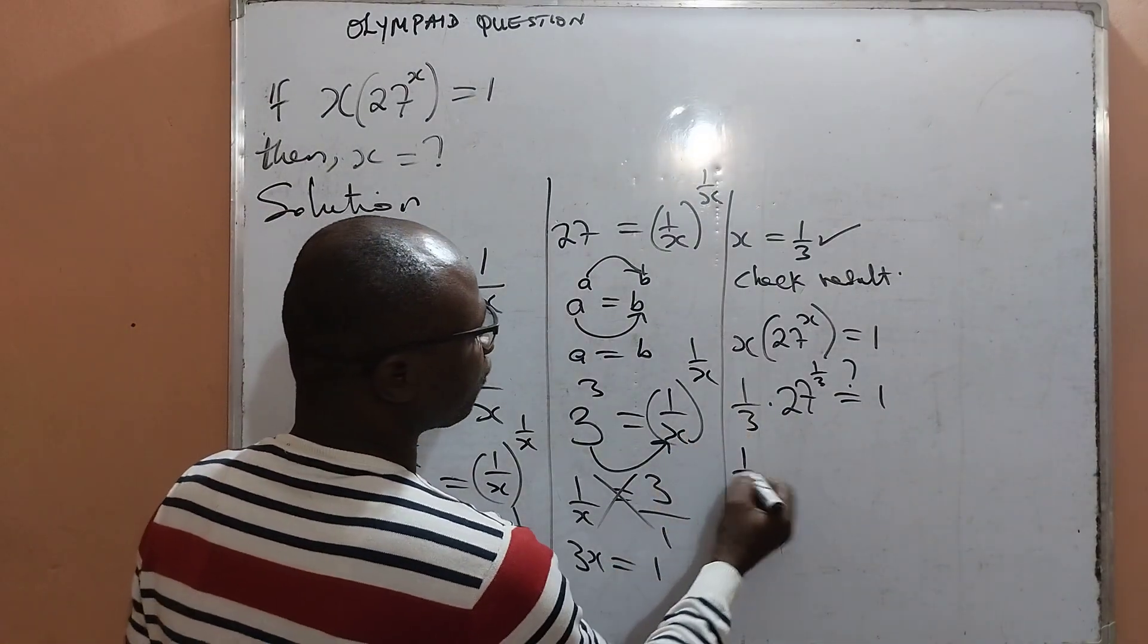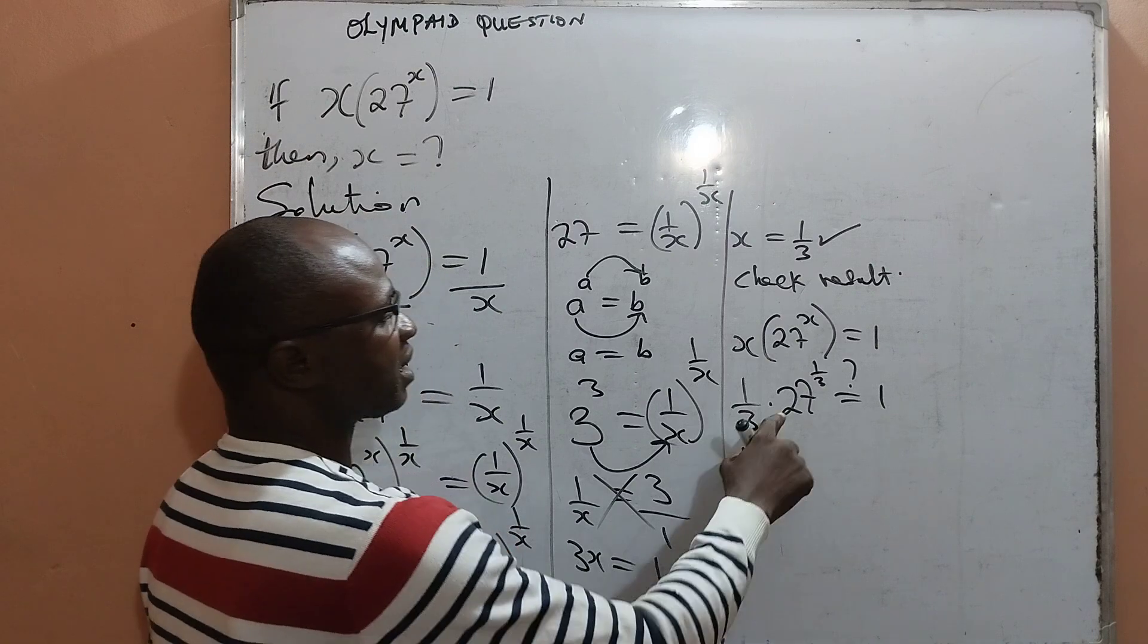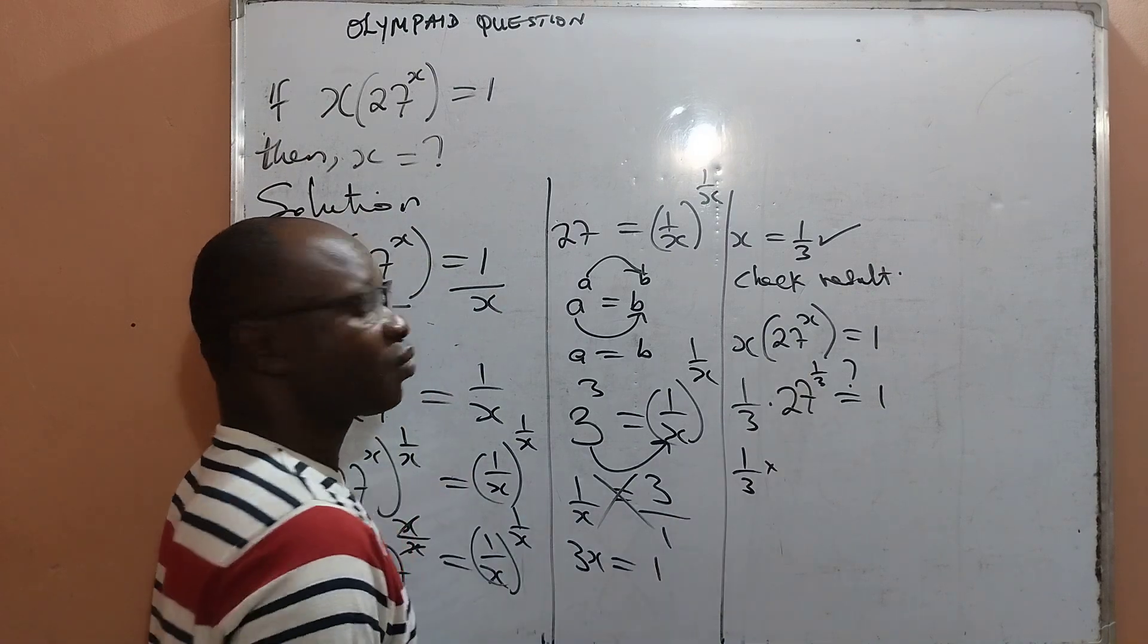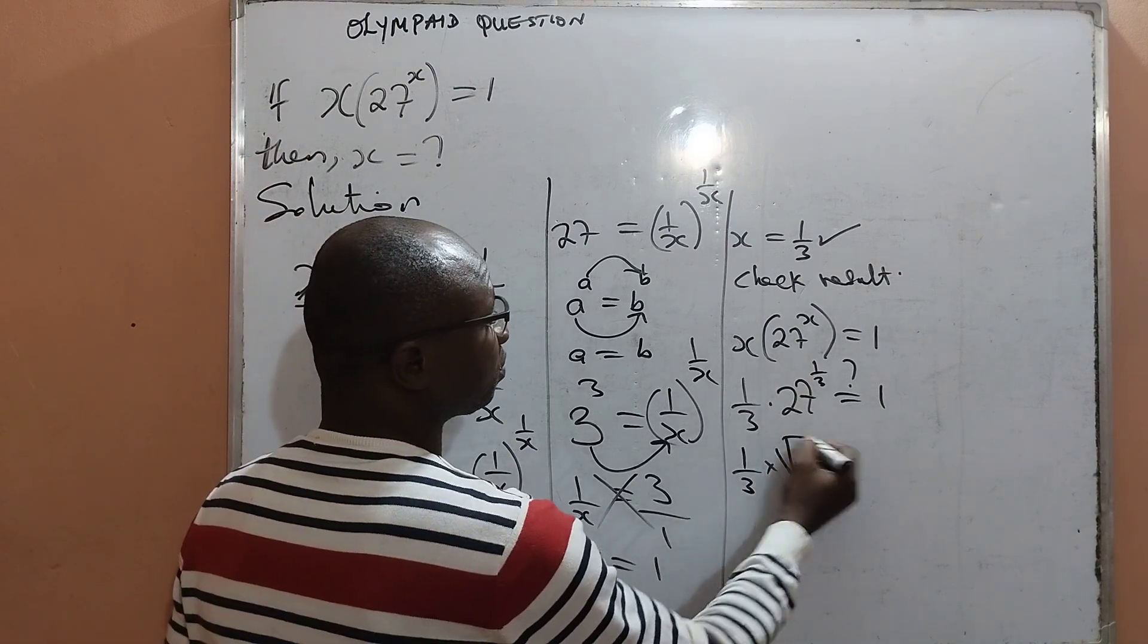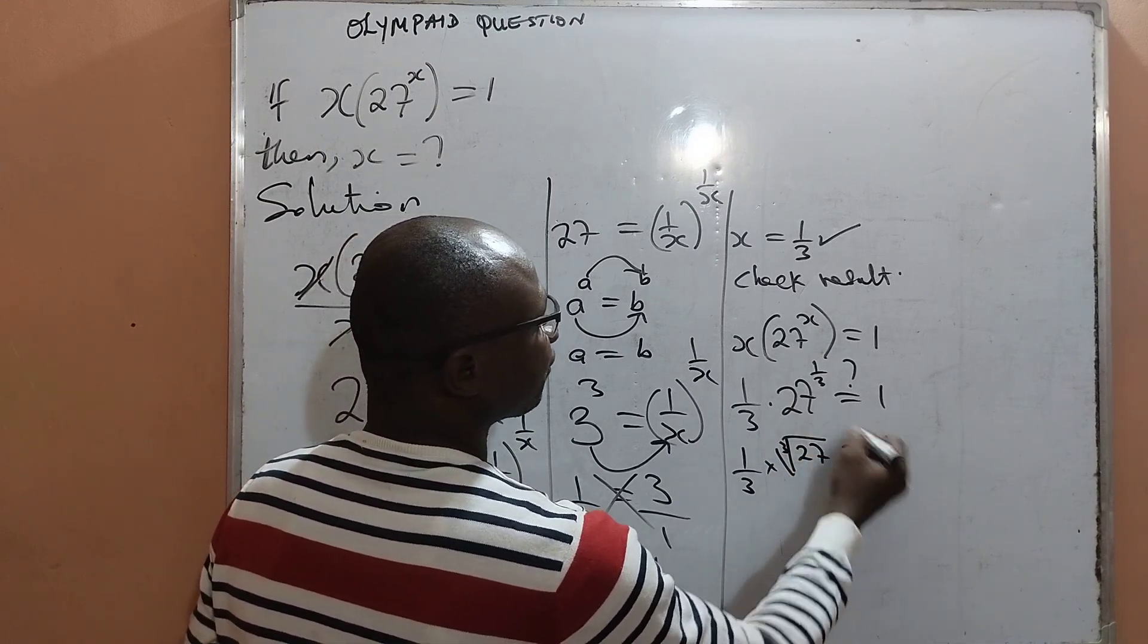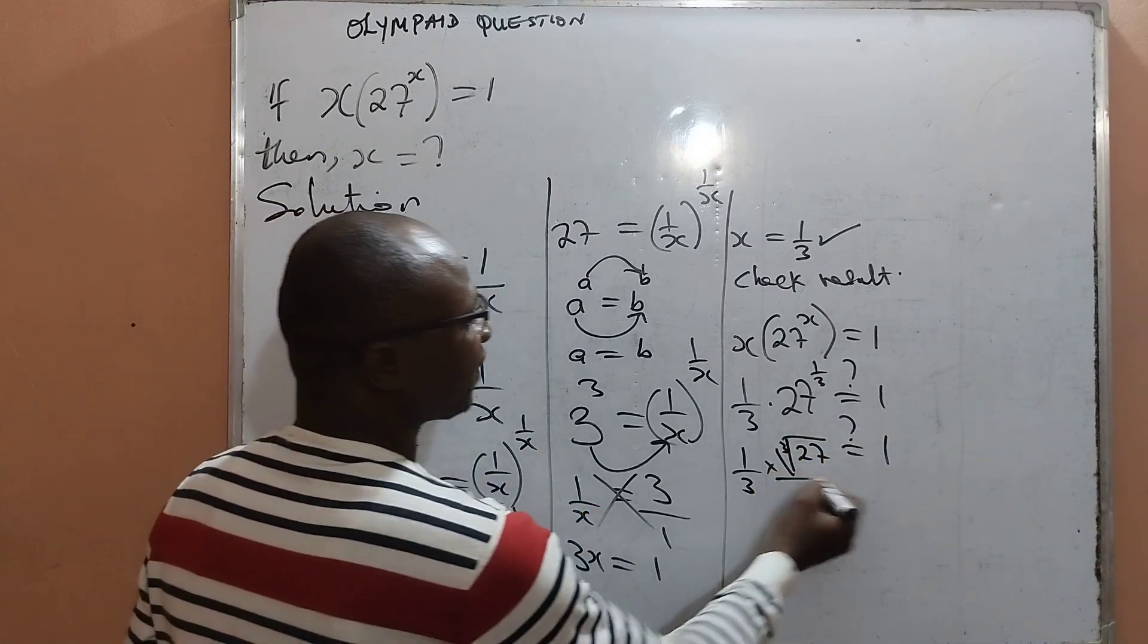From here I have 1 all over 3, then multiplying by 27 to the power of 1 over 3, which is essentially the cube root of 27. Will this give us 1? We find that.